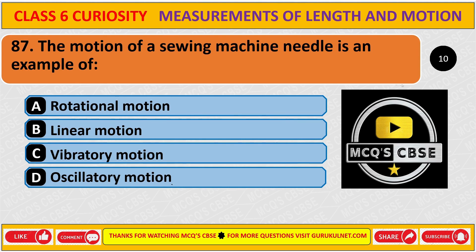The motion of a sewing machine needle is an example of — and the correct answer is D, oscillatory motion.